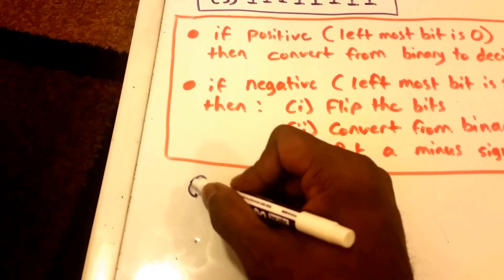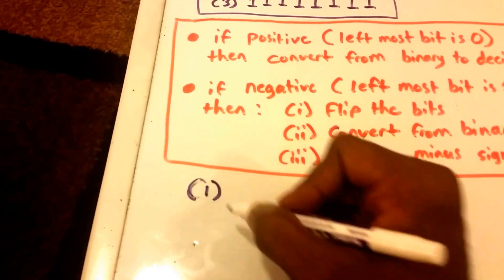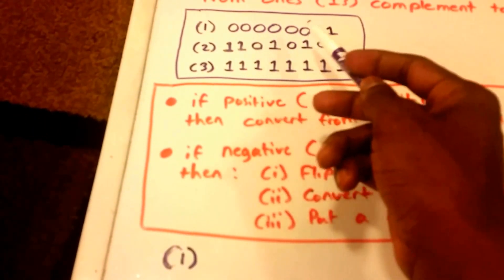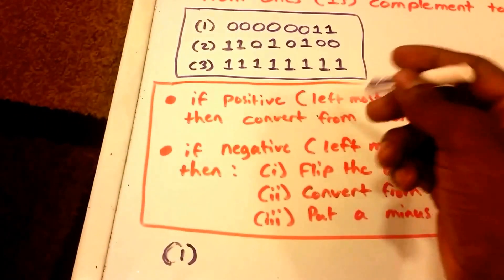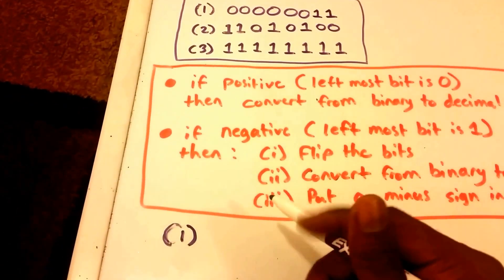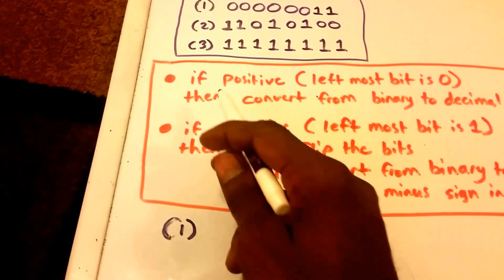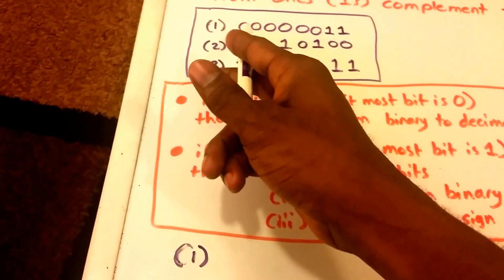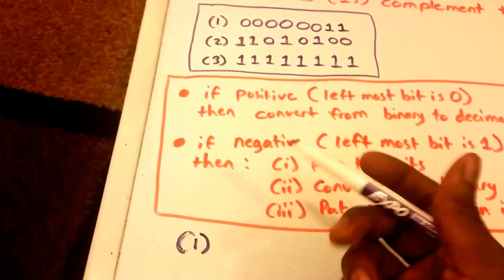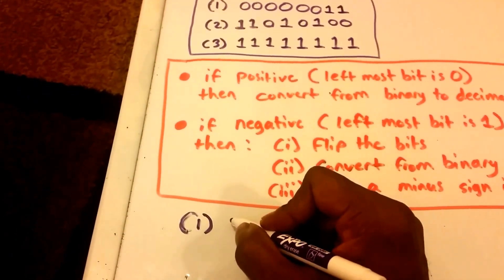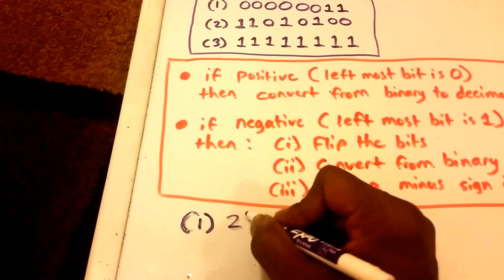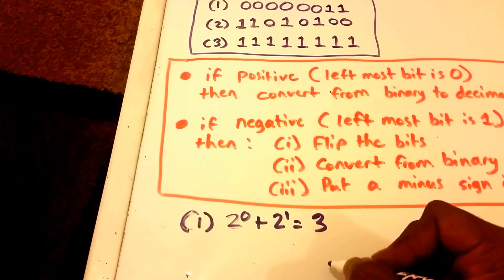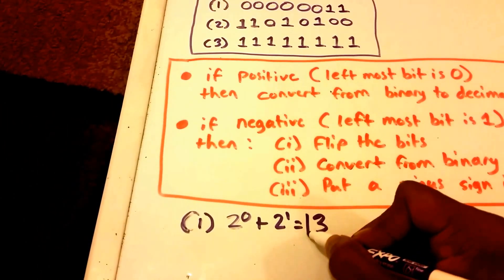Number one is 00000011. This is a positive binary number because the leftmost bit is zero, so we just do a normal conversion. This gives us two to the power of zero plus two to the power of one, which equals three.